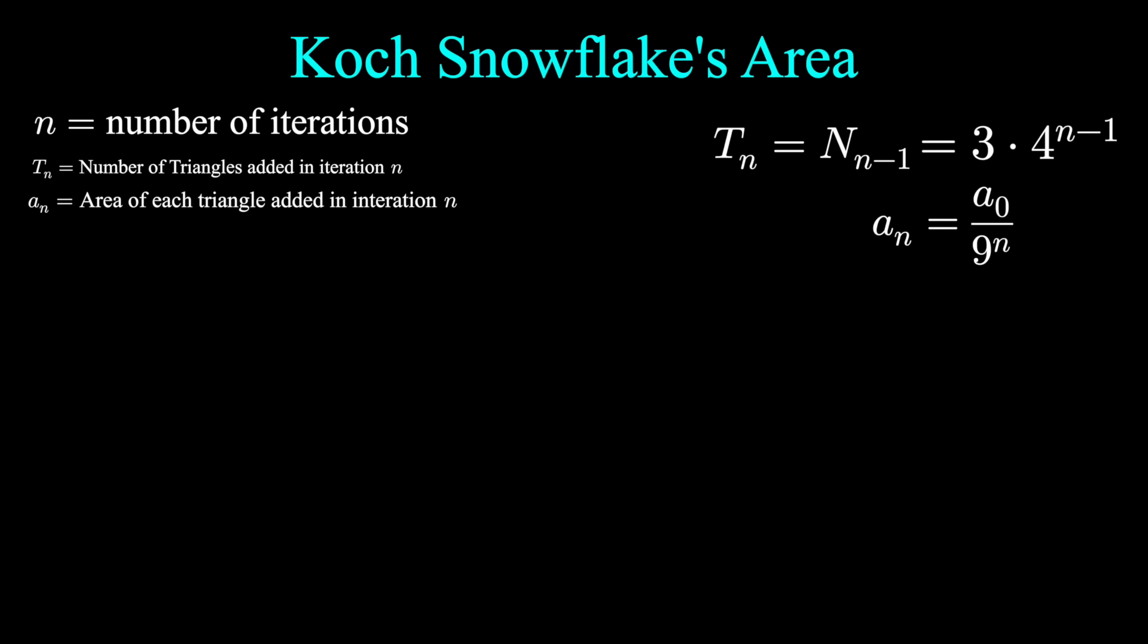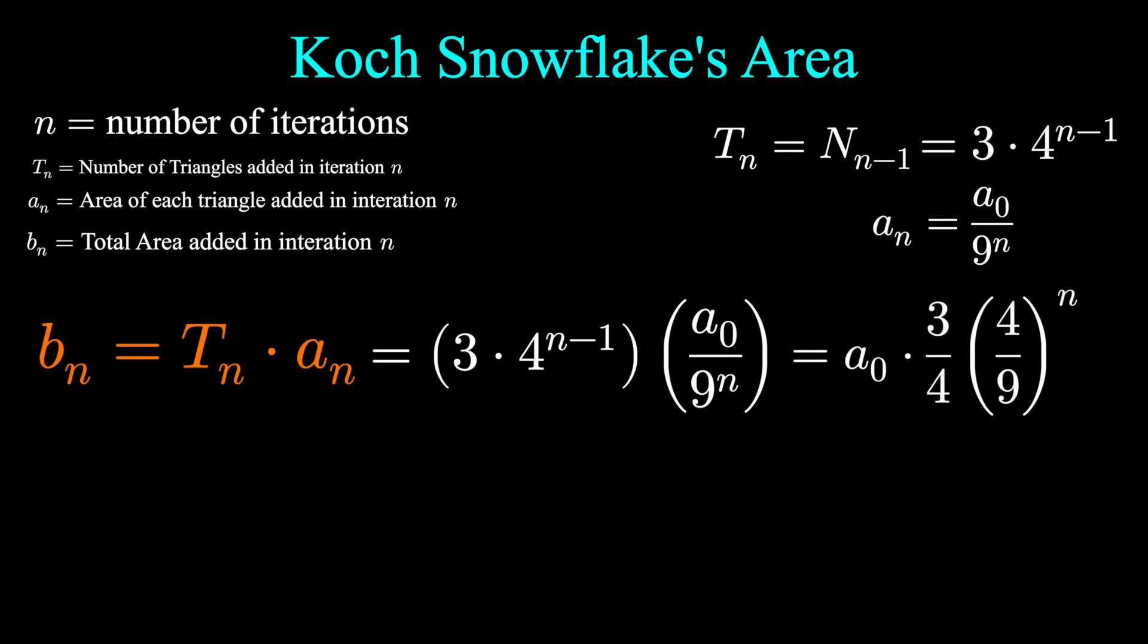Here's the fun part. We have a formula for the number of new triangles added, and we have a formula for the area of each new triangle added. So the total area added by each new iteration, I'll call it B sub n, should be the number of triangles added times the area added. Just multiply our two formulas together, and we can make this look a little nice with properties of exponents. That's the total new area added in each iteration.